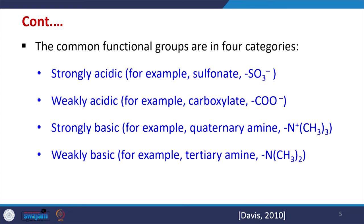All functional groups can be categorized into four types: strongly acidic (e.g., sulfonate functional group), weakly acidic (e.g., carboxylate functional group), strongly basic (e.g., quaternary amine), and weakly basic (e.g., tertiary amine). We can decide the functionality of the resin beforehand depending on the ions to be exchanged, their concentration, and the kinetics of exchange.